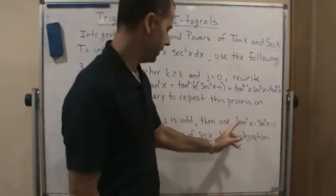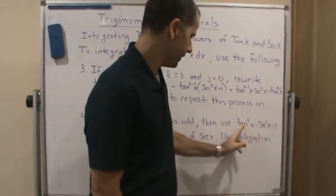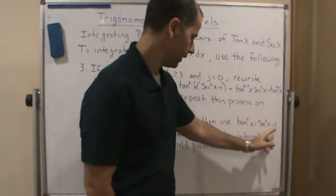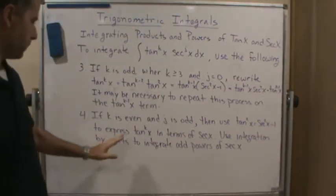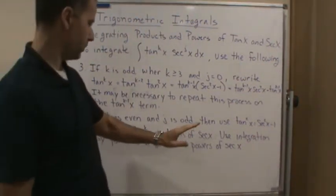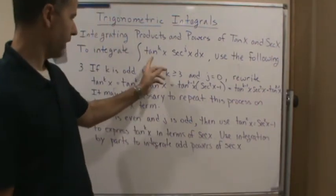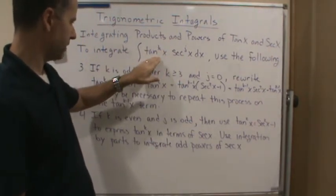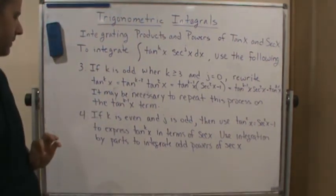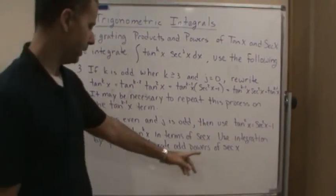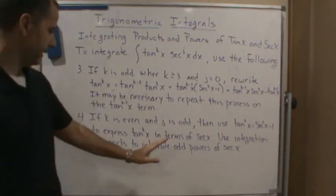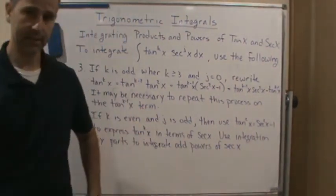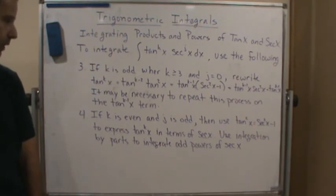Then what we're going to do is use the identity again, tangent squared x equals secant squared x minus one, to express tangent x in terms of secant. So then what you're going to do is leave this one alone and rewrite this in terms of secant. And then you're going to end up using integration by parts on the odd powers of the secant functions.